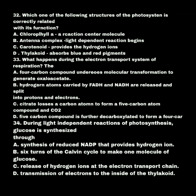What happens during the electron transport system of respiration? A. A four-carbon compound undergoes molecular transformation to generate oxaloacetate. B. Hydrogen atoms created by FAD and NADH are released and split into protons and electrons. C. Citrate allows a carbon atom to form a five-carbon atom compound and a carbon dioxide. D. A five-carbon compound is further decarboxylated to form a four-carbon molecule. Our answer is choice B.